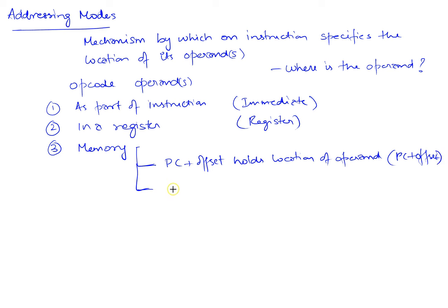Or we can say it's base plus offset holds the location of the operand. This is called base plus offset. We'll call this indexed addressing mode on some machines.